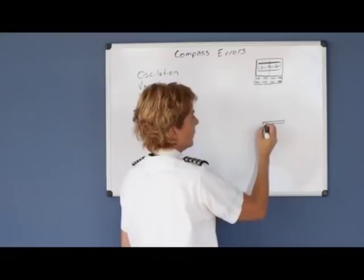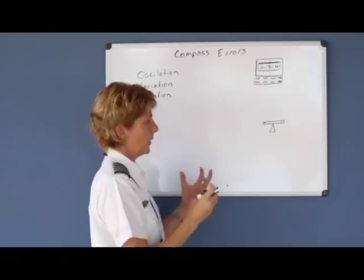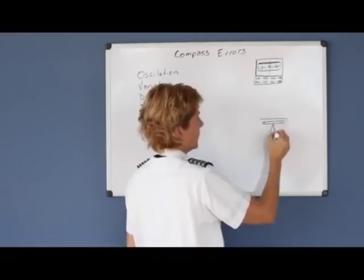We have a north-seeking end and a south-seeking end set on a pivot, and the north-seeking end seeks the magnetic north pole. This would be very unstable if they didn't dampen those oscillations, so they fill the instrument with fluid, typically some kind of kerosene.